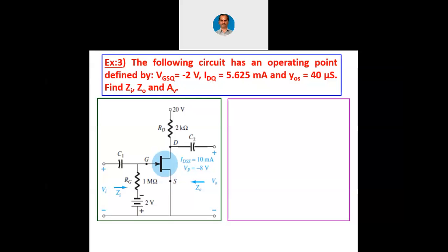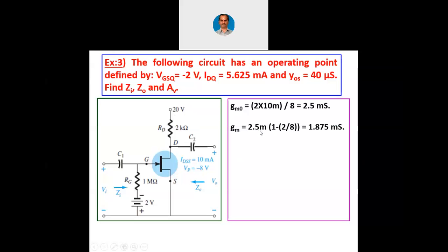So gm0 is 2 into IDSS divided by VP. We get gm0 equals 2 into 10 milliampere divided by 8, which gives 2.5 millisiemens. Note that we need not apply a minus sign because conductance cannot be negative. Then, gm equals gm0 into (1 minus VGS by VP), which is gm0 into (1 minus 2 by 8). We get gm approximately 1.875 millisiemens.